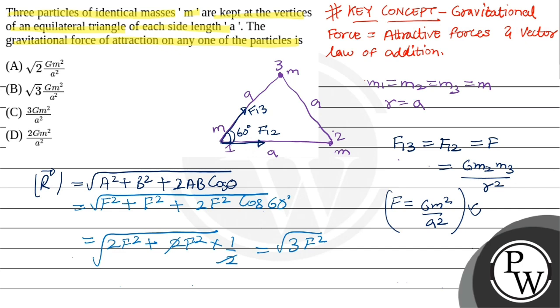So here we have 3F square under root. So we have a resultant force, this is the F net on any one of the particles. So here we can see that F net comes out to be under root 3 times F.